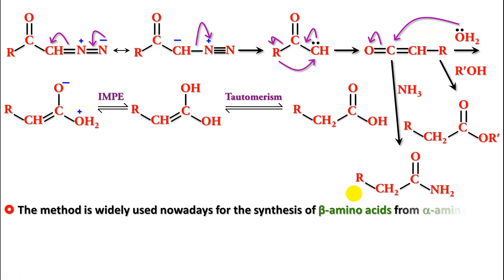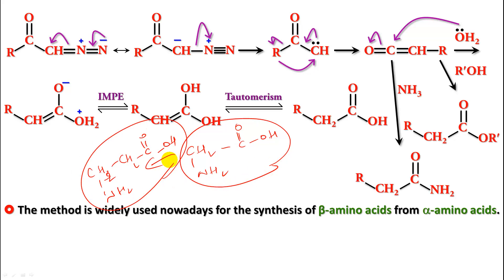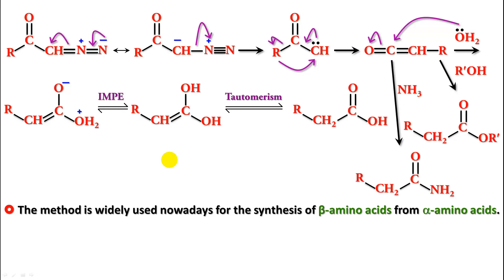Typically, Arndt-Eistert synthesis is used to produce a beta amino acid from an alpha amino acid. For example, starting from an alpha amino acid, an additional CH₂ unit is introduced and you get a beta amino acid from the alpha amino acid. So that's Arndt-Eistert synthesis — thanks for watching.